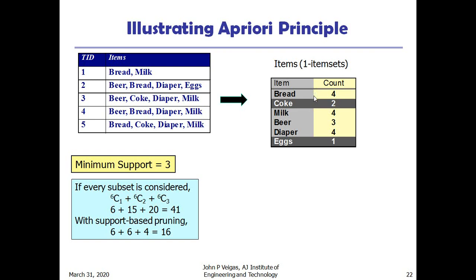If we consider all subsets, there are six total items. For one item sets we have 6C1 candidates; for two item sets, 6C2 = 15; for three item sets, 6C3 = 20 — totaling 40. But by using support-based pruning we can reduce this to 16. After reducing the one item sets to Bread, Milk, Beer, and Diaper, we generate two item sets excluding Coke and Eggs.